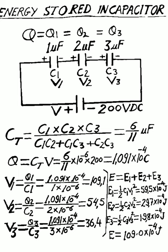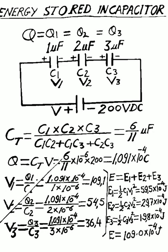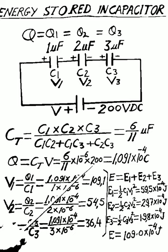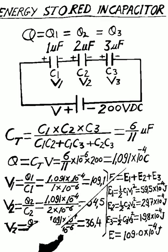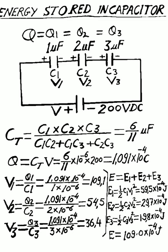Charge Q equals CT multiplied by V, which is 6/11 multiplied by 10 to the power minus 6, multiplied by 200 volts, giving Q equal to 1.091 × 10⁻⁴ Coulombs.